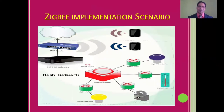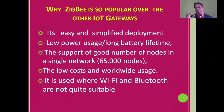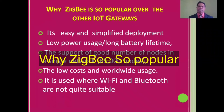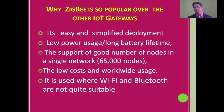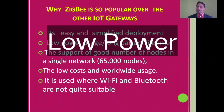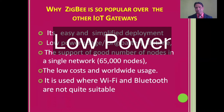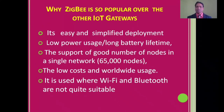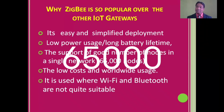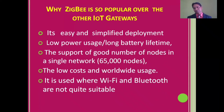The next question is: why is Zigbee so popular over other IoT gateways? It is easy and simple to deploy, uses low power for long battery lifetime, and can support a large number of nodes — up to 65,000 nodes in a single network. It is low cost, and that's why it is a world standard. It is used where Wi-Fi and Bluetooth are not quite suitable.